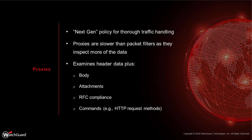Proxies, on the other hand, represent next-generation UTM filtering. They look not just at source, destination, port, and protocol, but into the body of the message — inspecting attachments, content, and commands — making sure traffic adheres to your security policy and applying security services. Most of what you do on a WatchGuard is going to be a proxy. A few defaults like ping use a basic packet filter, but normally it's a proxy.